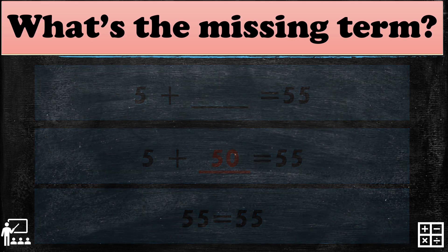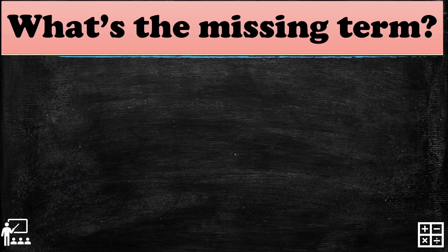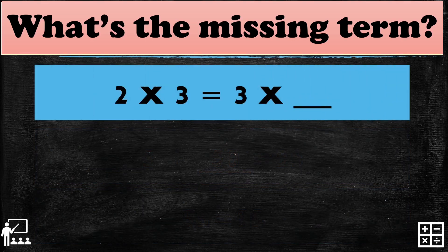Next equation: 2 times 3 equals 3 times blank. In this equation, there is a missing term. Then we're going to check if it is equal or not.